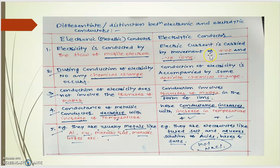So now in second point, during conduction of electricity, no any chemical change occurs. So chemical change is related with the chemical reaction. It may be oxidation, it may be reduction. So such kind of reaction doesn't followed by the electronic conductors because of which no any chemical change occurs.